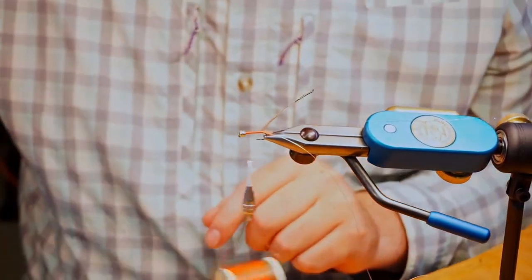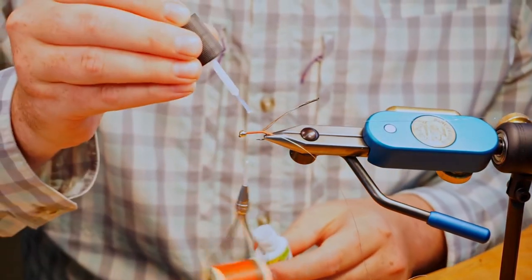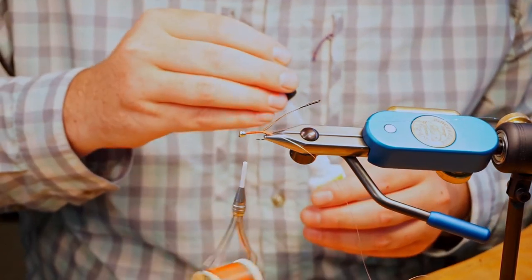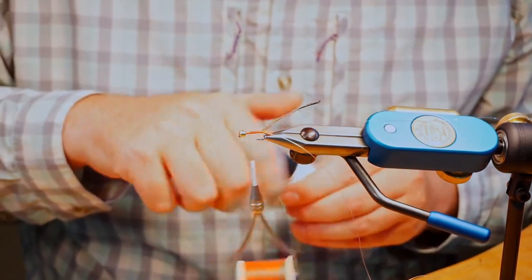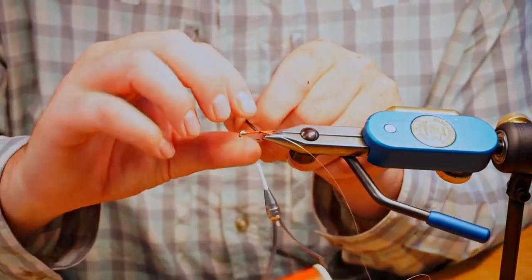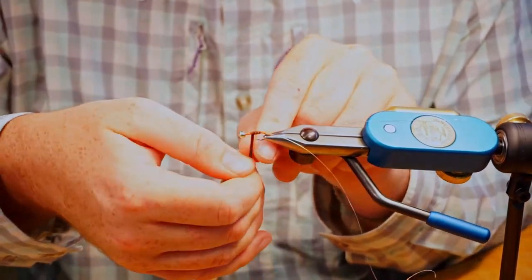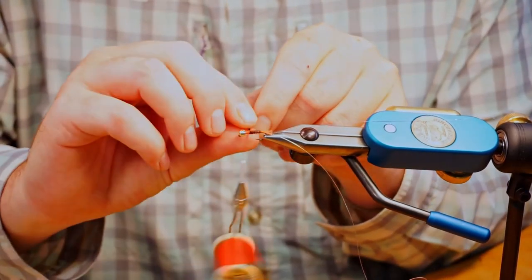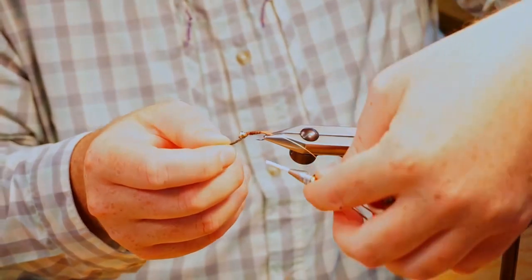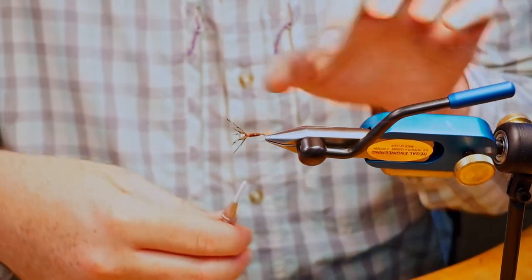Now I'm just actually going to just lay down a really thin layer of super glue here. Just to secure this stuff in there while I'm wrapping it. So then just wrapping this pheasant tail forward. Keep it as thin as you can. Don't want these things too bulky. Tie that off.